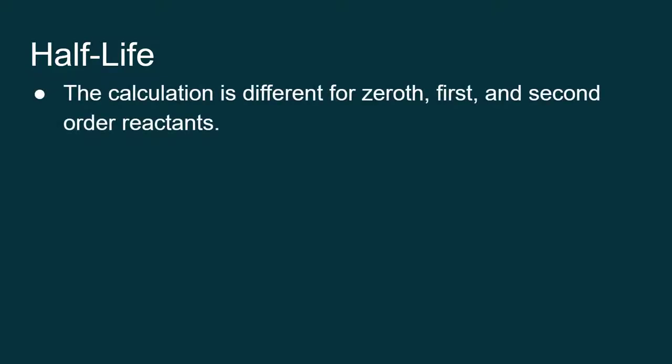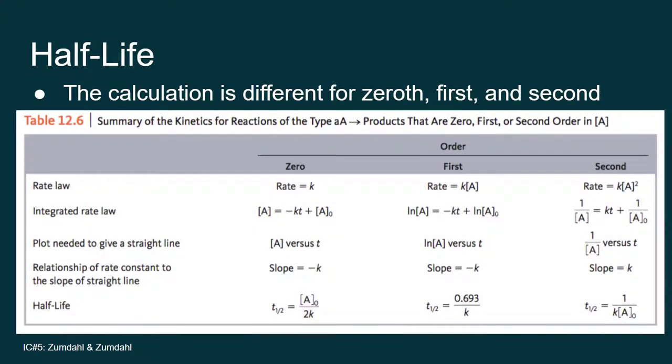The calculation for half-life is different depending on the order of the reactant. If we look at the summary table that's found in the end of this section, you'll see that at the bottom of it there are half-life calculations. T1/2 symbol is referring to half-life. For a zeroth order, the half-life is the initial concentration divided by 2 times the rate constant.